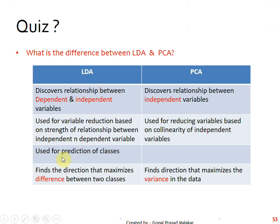For that reason, LDA is used for prediction of classes. LDA finds the direction that maximizes the difference between two classes, whereas PCA is not talking about the outcome at all. It tries to find the direction that maximizes the variance in the data.